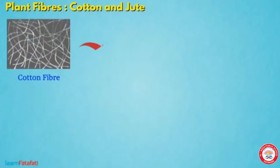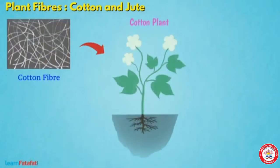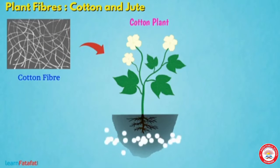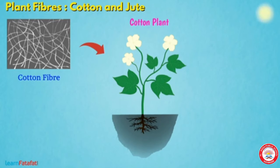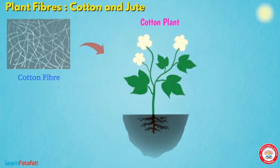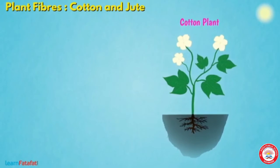So let us start with cotton. Cotton fiber we are getting from cotton plants. Plants are usually grown at places having black soil and warm climate.